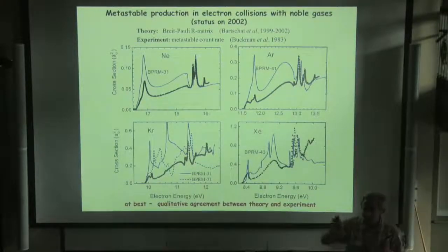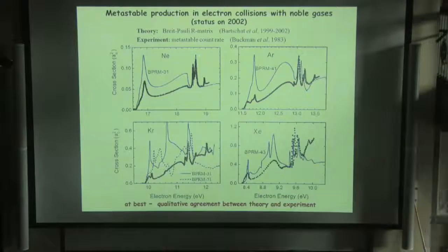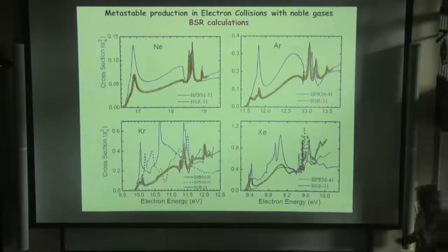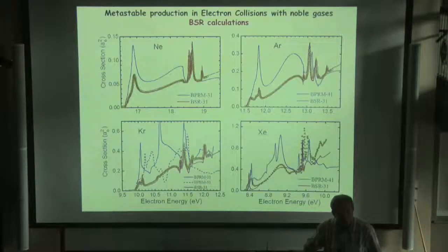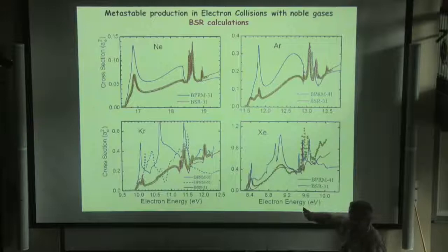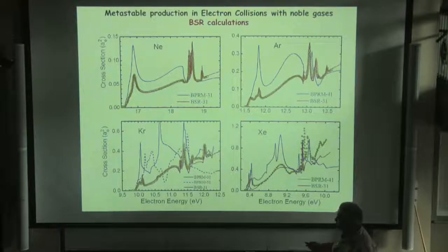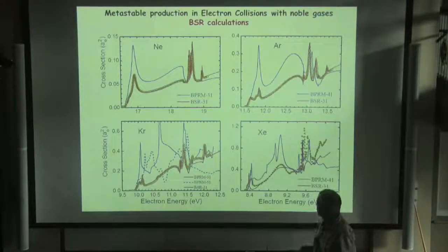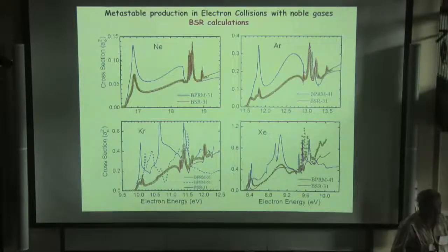We applied our technique and used for each state term-dependent orbitals generated independently, very accurately, in big expansion. And what we obtain here in red are our results. You see, for neon and argon, we already obtained the perfect agreement with the resonance behavior and resonance structure, after a small renormalization in the cascade contribution. For krypton, it's not so good, but nevertheless, it also reproduces all resonances and big improvement in comparison to the previous calculations.